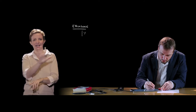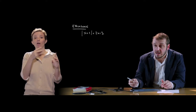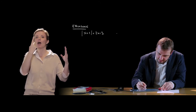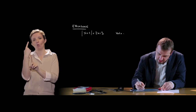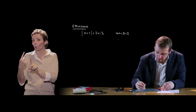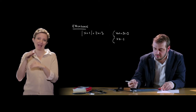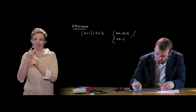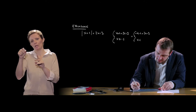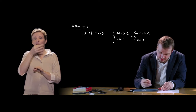Let's do an example: |x + 1| = 2x - 3. This equation with the modulus is equivalent to two systems. First: x + 1 = 2x - 3 when x + 1 is positive, i.e. x ≥ -1. Or: -(x + 1) = 2x - 3, i.e. -x - 1 = 2x - 3, when x < -1. We must solve both systems simultaneously.